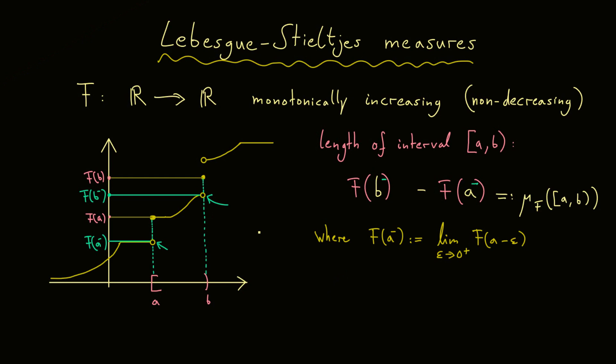And at this point, you are allowed to ask, what happens if I come from the right hand side instead of the left hand side. And then what you get is an alternative way to write this down. So we have F(b+) minus F(a+), where the plus now means the right hand limit.